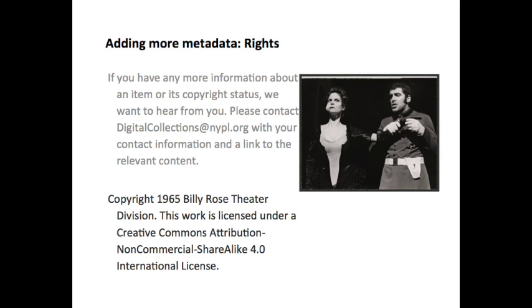Now let's take a look at that rights statement. The original statement doesn't really tell you anything about the photograph's copyright status or how it can be reused. This is likely because the rights status is unknown, which is a common situation. However, the rights statement should communicate information about its usage, even if the copyright status is under investigation. Now suppose we did know the copyright status of this photograph. The first sentence in the updated rights field communicates the copyright, and the second sentence uses a Creative Commons license which tells you how it can be used. The rights training module will give you more information about how to investigate copyright status and form rights statements.